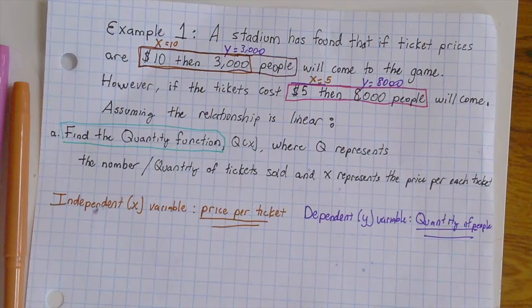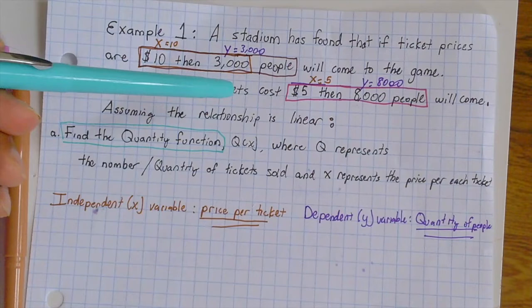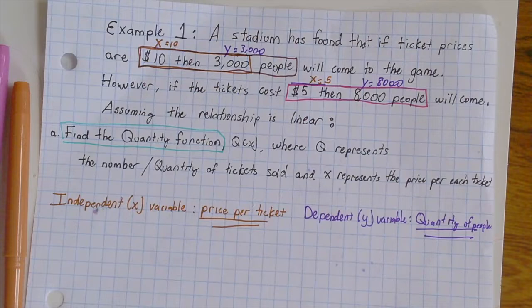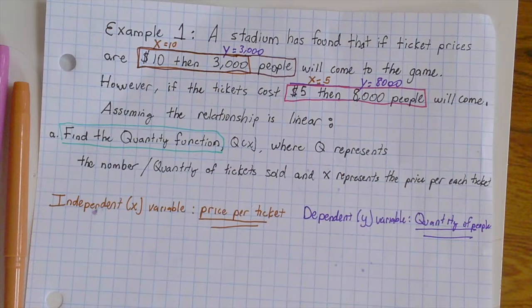When we're annotating, x equals 10, y equals 3,000, x equals 5, y equals 8,000, and we're trying to find the quantity function. Now that we establish our mathematical annotations, we can now create two points. Good. Now that we have our two points, please calculate slope of these two points.